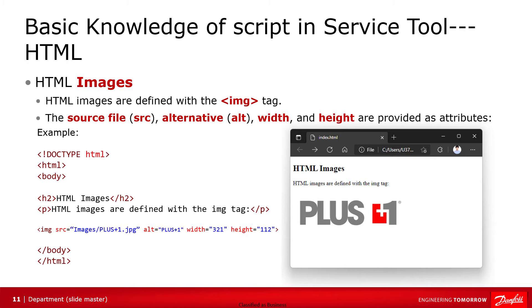The image element is defined by the img tag. The img tag is empty — it contains attributes only, and doesn't have a closing tag. The img tag has two required attributes: src and alt. src stands for source; it specifies the path to the image. alt stands for alternative; it specifies an alternate text for the image. If a browser cannot find an image, it will display the value of the alt attribute. You can use the width and height attributes to define the size of an image. In this example, we use the img tag to show a plus one logo on the browser.